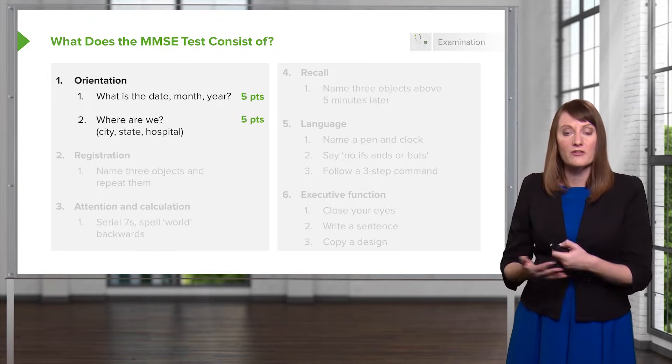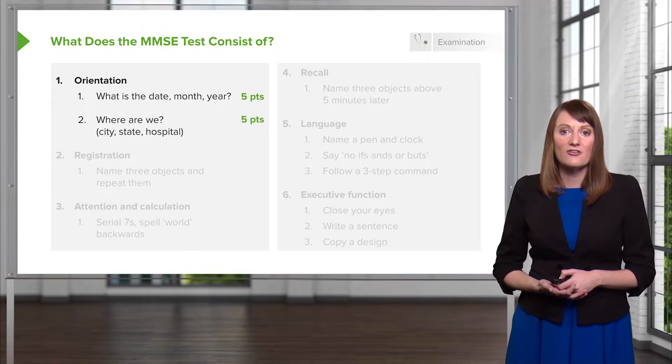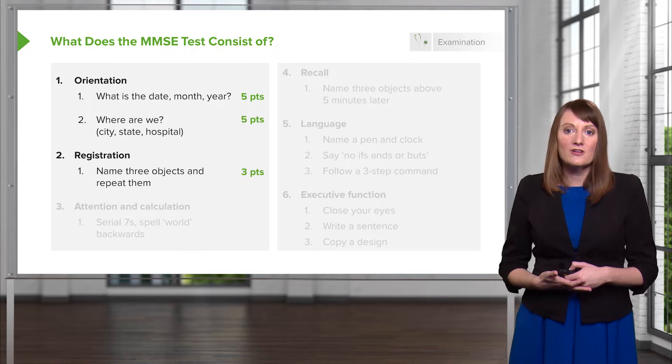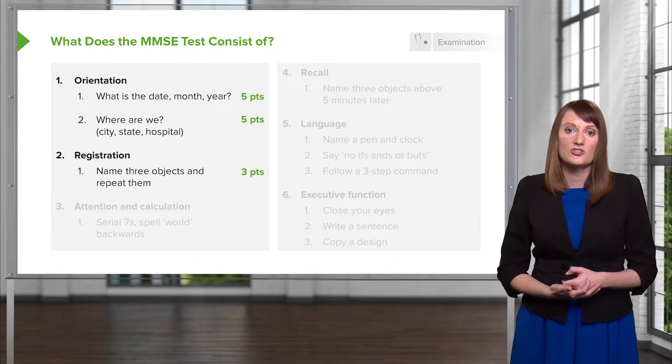Do they know that it's a hospital, what floor they're on, or whether it's an outpatient clinic, what city they're in? You're really going to score them there based on their orientation. And you're going to want them to name three objects and register them, meaning repeat them right back to you.